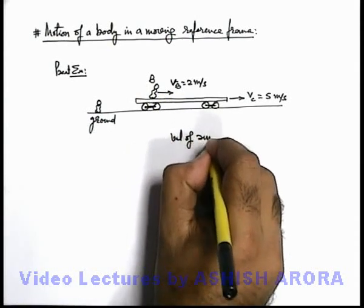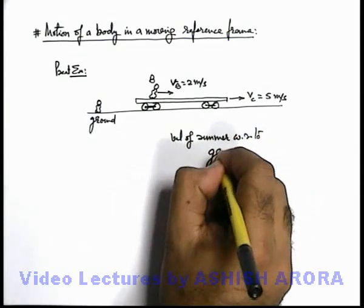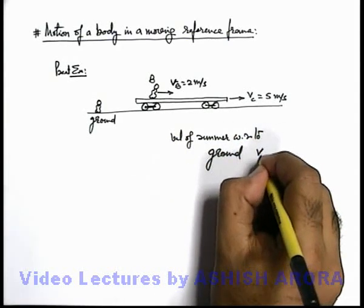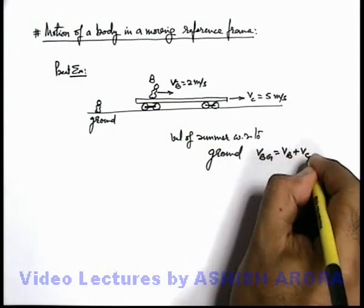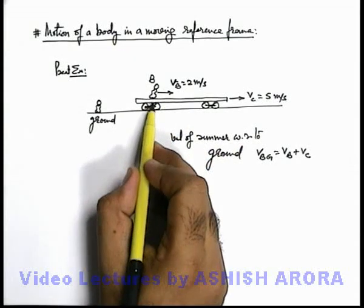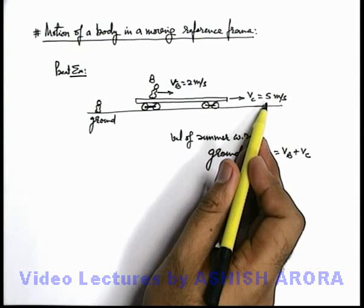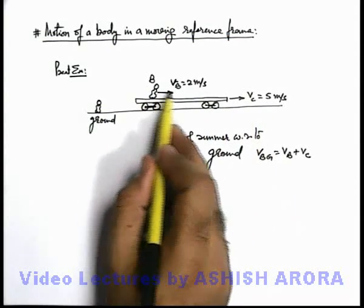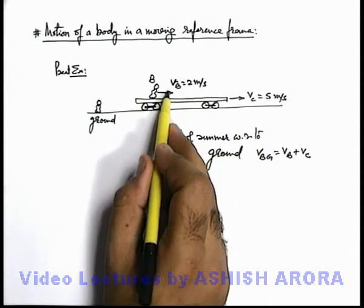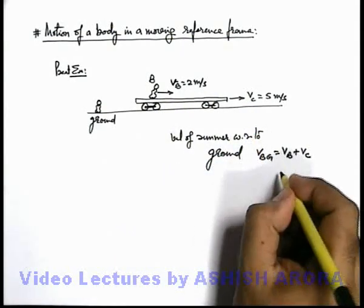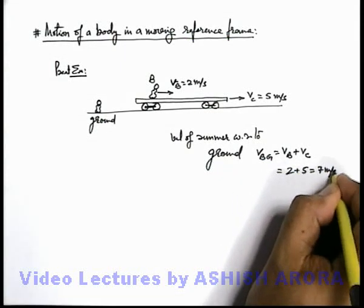Velocity of runner with respect to ground can be written as v-b plus v-c. Because when he was at rest on the car, it was moving with a velocity v-c that is 5 meters per second. When he starts running on the car, his 2 meters per second will be an additional velocity over this 5 meters per second. So his net velocity will be 2 plus 5 meters per second, that is 7 meters per second.